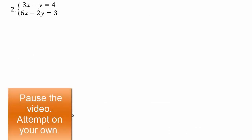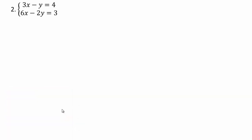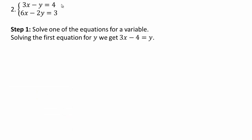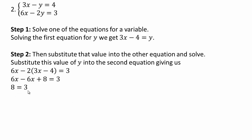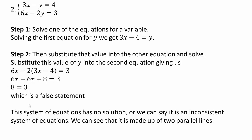Try this on your own — pause the video. Step 1: use the first equation and solve for y — just add y and subtract 4. Then substitute that value of y into the second equation: 6x minus 2 times y. Solve for x, and look what happens — you get 8 equals 3. That's not a true statement, so this equation has no solution. That means this system of equations has no solutions — it is an inconsistent system. If you were to solve the equations, you'd see they are two parallel lines because both have slope 3.